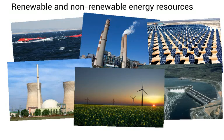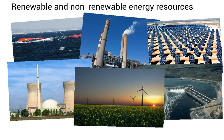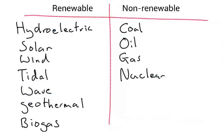Renewable means that effectively the source of energy will never run out, whereas non-renewable — maybe it's a fuel, something you've got to burn — eventually it's going to run out and it can't be replaced, so that's why it's called non-renewable. Here are a list of the renewable and non-renewable energy resources you're meant to know.